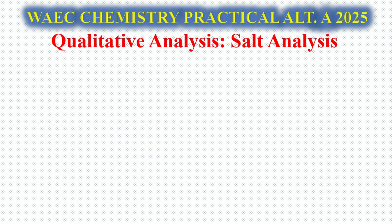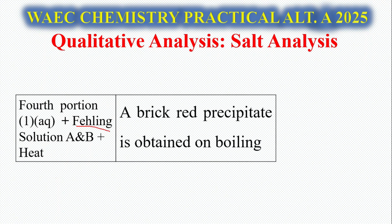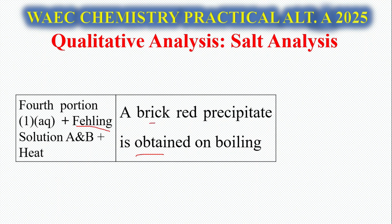For the fourth portion plus Fehling's solution A and B: when you heat or warm Fehling's solution A and B with the portion of the solution, you observe a brick red precipitate on boiling. If the question asks about the fourth portion with Fehling's solution without heating, you write 'no feasible reaction' first, and under inference, 'nothing.' But upon heating, the brick red precipitate confirms a reducing sugar.